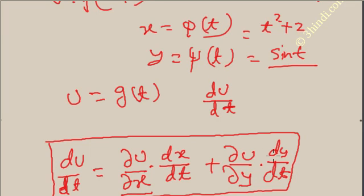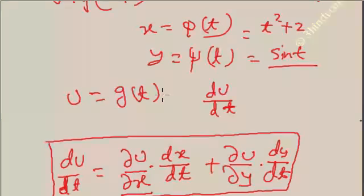So dy/dt and dx/dt you can find, and you can also get the values of ∂u/∂x and ∂u/∂y. After partially differentiating, put x and y in terms of t, and the result will be final.